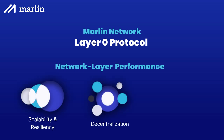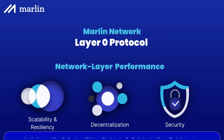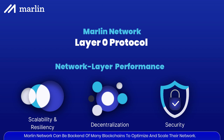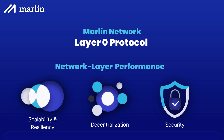Marlin is also known as a layer zero protocol, which is focused on network layer performance like scalability, resiliency, and most importantly security as well, by optimizing the network architecture underneath the blockchain. This means it could be the backend of Polkadot, Harmony, Domochain, Polygon and many more to optimize and scale their network.